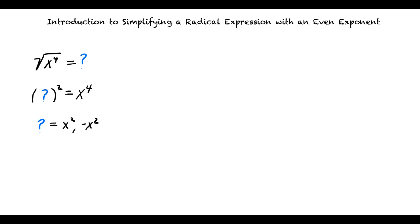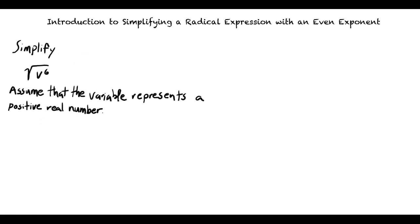This seems to all make sense. Can we try out an example problem? Definitely. This problem is asking us to simplify the square root of v to the sixth power, and to assume that the variable represents a positive real number.